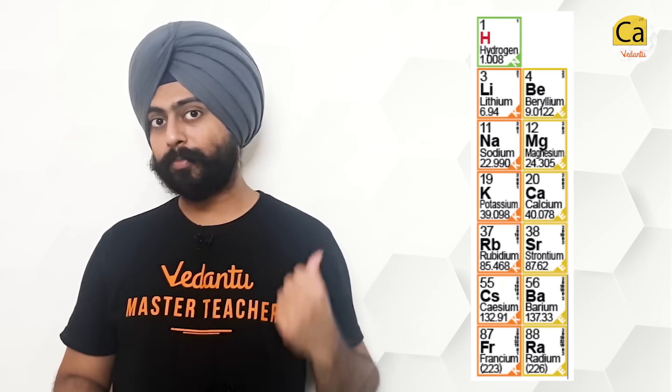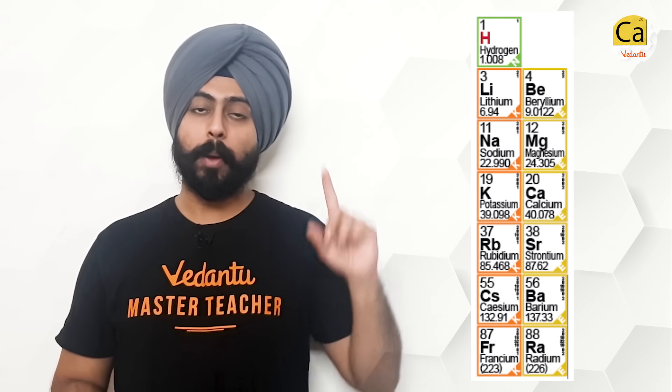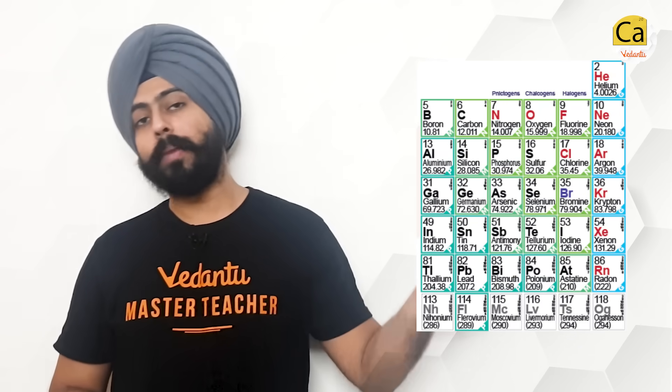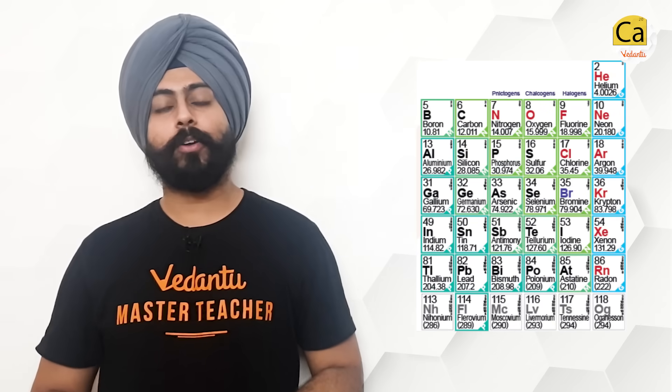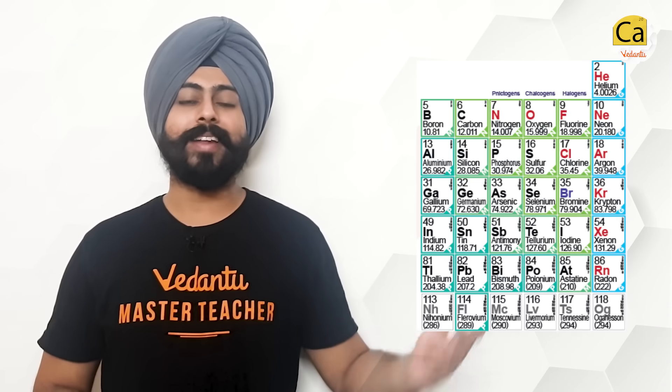Transition elements and inner transition elements tend to show multiple variable oxidation states. For the s-block, it is filled with metals. The p-block has both metals and non-metals. Metals are towards the left side of the periodic table and non-metals are towards the right side.